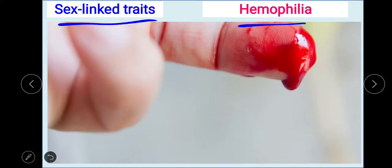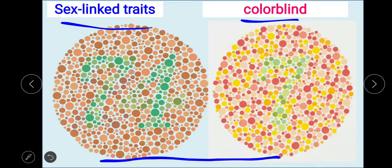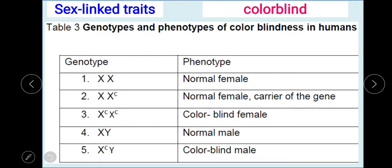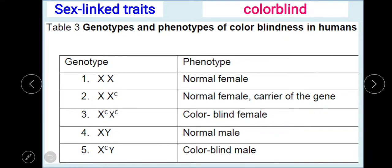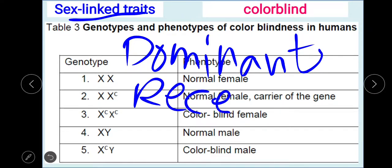Next, we have sex-linked traits. An example is hemophilia, a disorder in which blood clotting is very slow or does not clot at all — this is very dangerous. Another example is color blindness. Here we have two images: if you can notice numbers in the picture, you are not color blind. But if you cannot see numbers in the picture, then you are color blind. Color blindness is represented by letter C. Sex-linked traits are expressed differently by gender — dominant in one gender while recessive in the other.